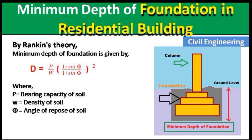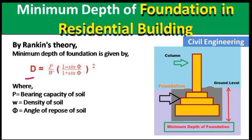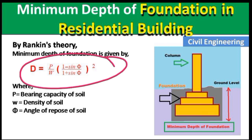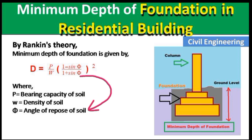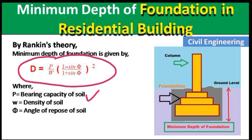Now let us look at the formula to calculate the depth of foundation. We will use Rankine's theory, which is the most commonly used formula. The minimum depth of foundation is: D = (p / w) × ((1 − sin θ) / (1 + sin θ))², where p is the bearing capacity of the soil, w is the density of the soil, and θ is the angle of repose of the soil.